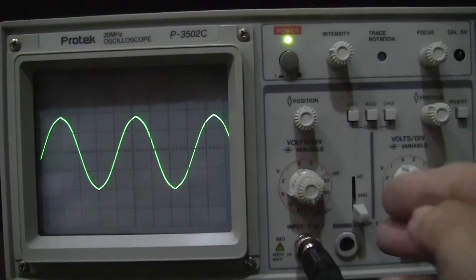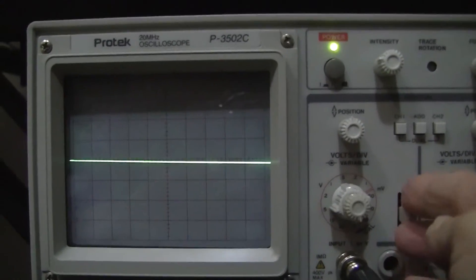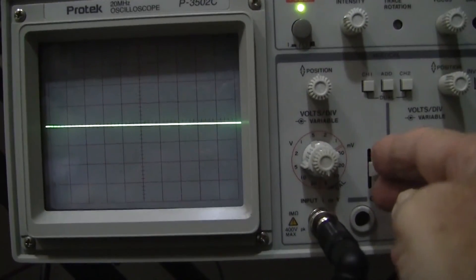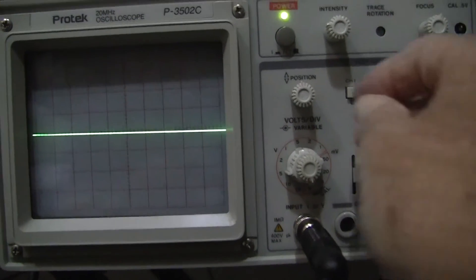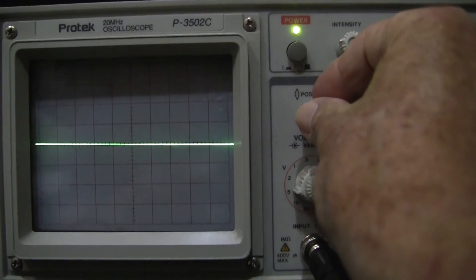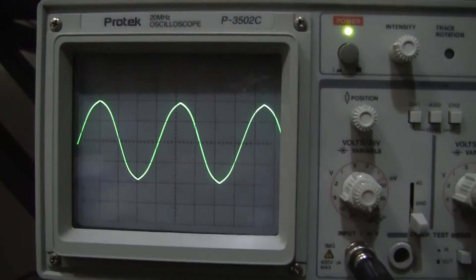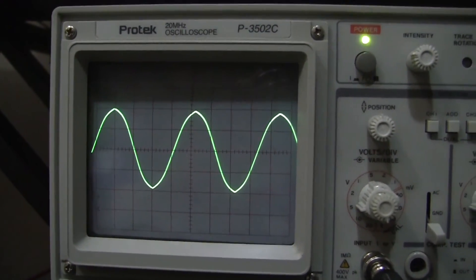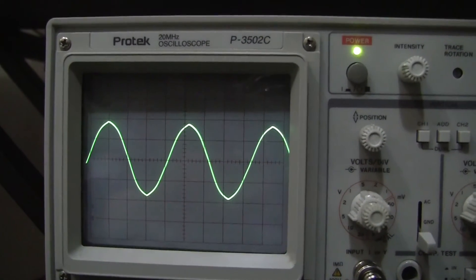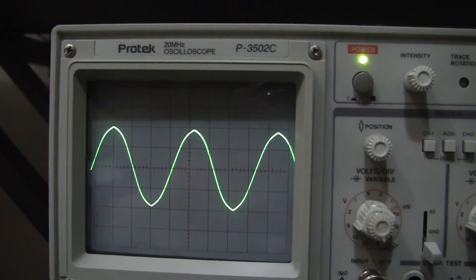And if we flip it to ground our signal disappears and we can see that we need to adjust our calibration position just slightly. Flip it back on and we've got our 10 volts above and below the zero line.